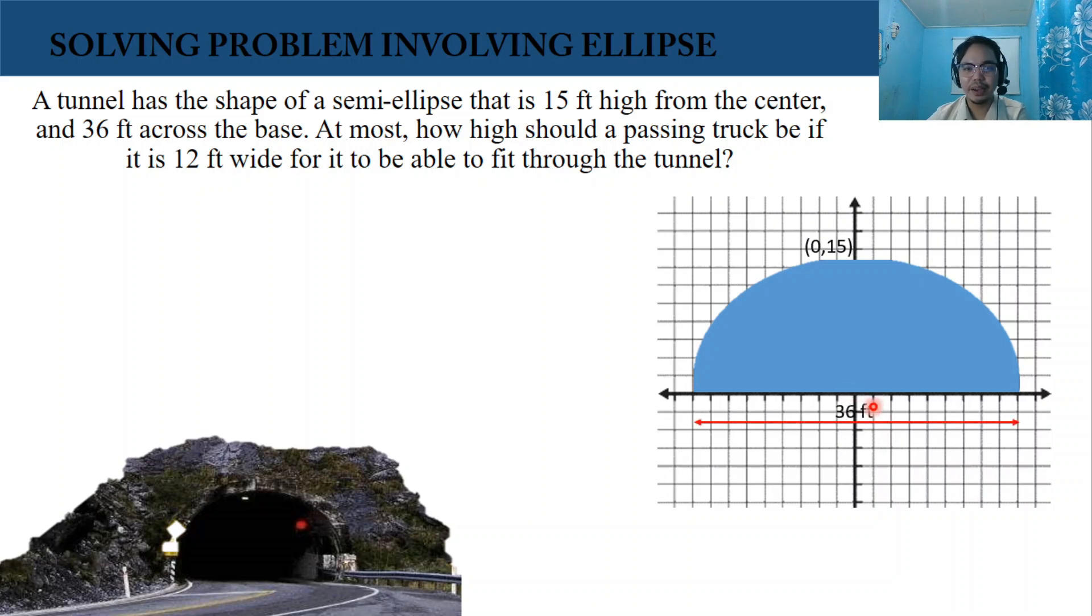Then the width of our tunnel is 36 feet across the base. So from the center going to this point, that is 18. So we have (18, 0). Then to the other side, we have (-18, 0).